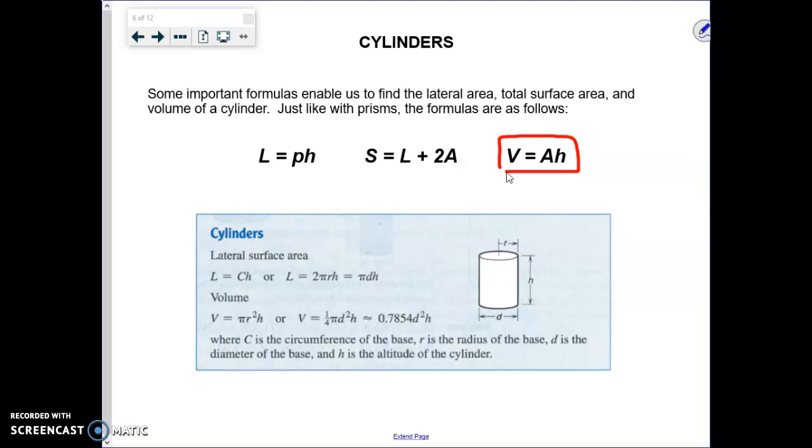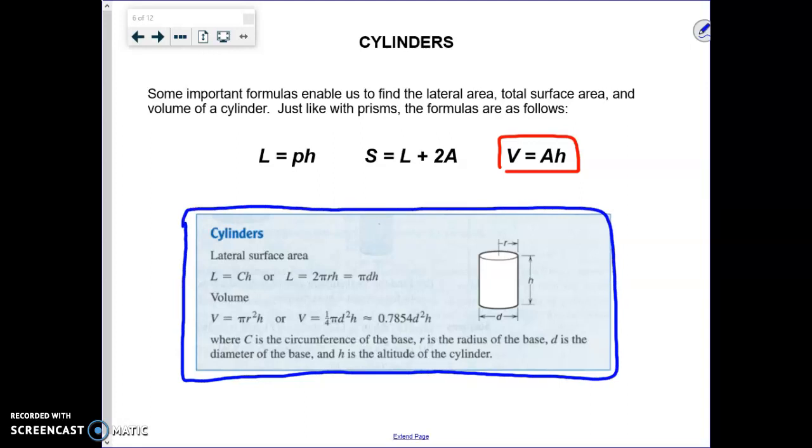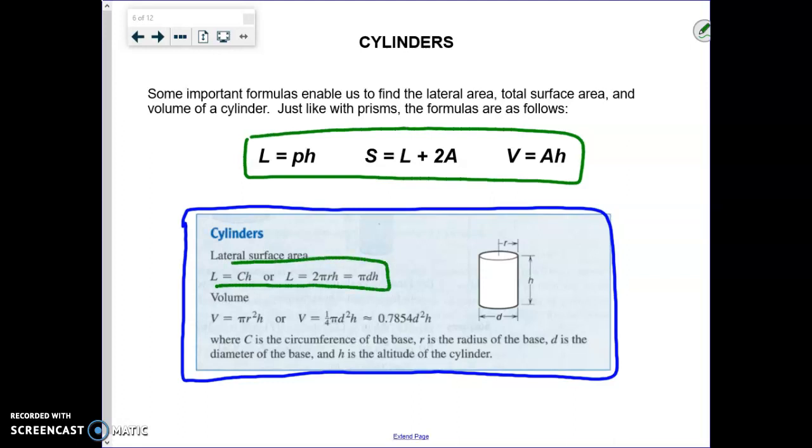By all means, you can use these formulas if you want to, and you'll be able to use your formula sheet on any quiz. But like I said, it basically comes down to these three formulas that you use for prisms - they also work for cylinders. All they did for these formulas for lateral area and volume is plug in πr, πd, and h. I don't like saying 'lateral surface area' - I just like to say 'lateral area.'